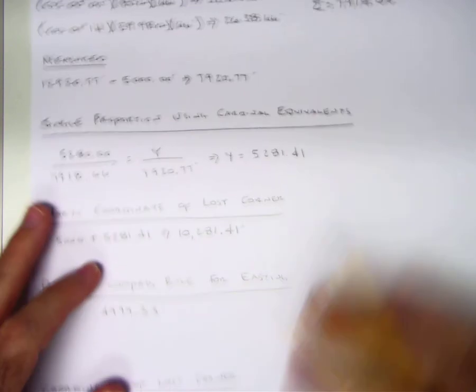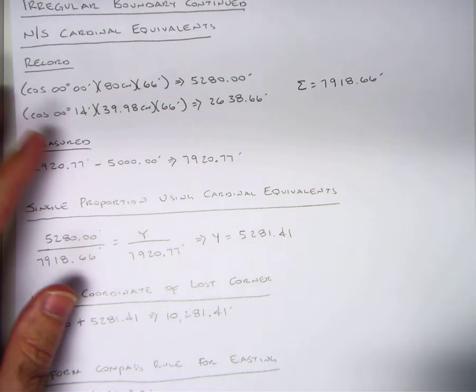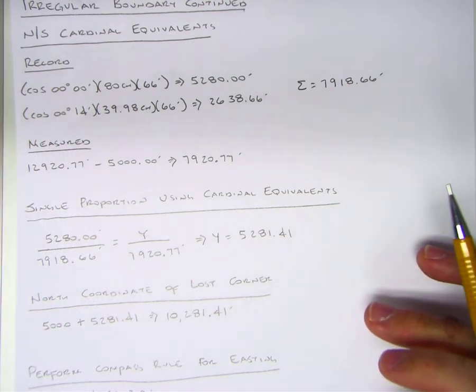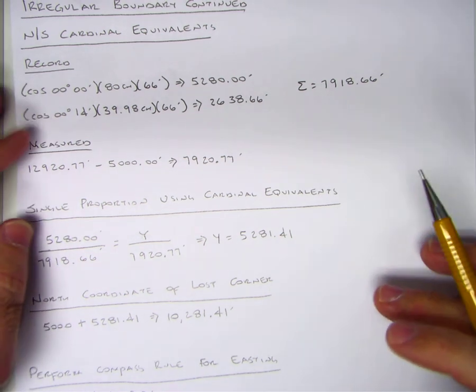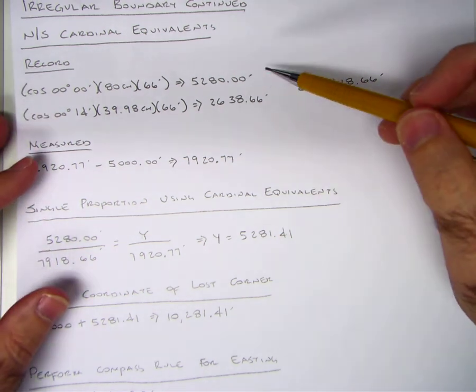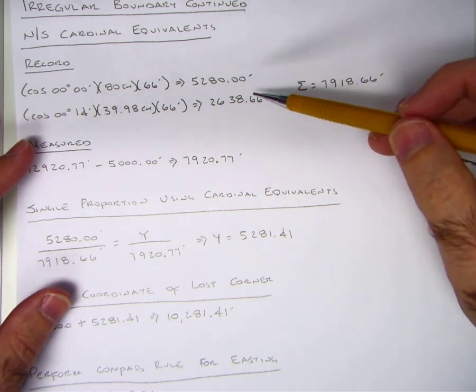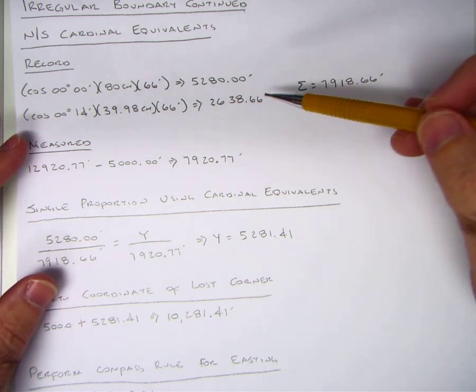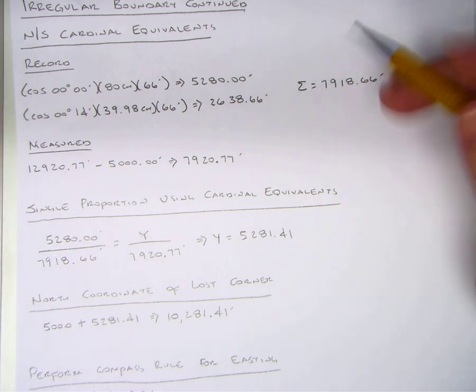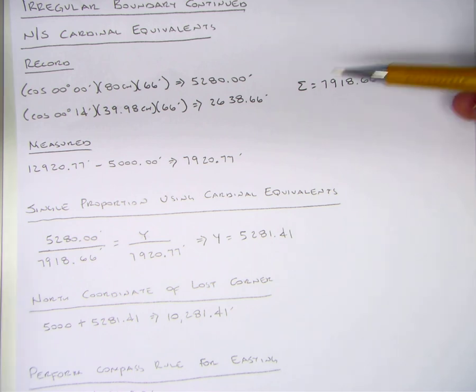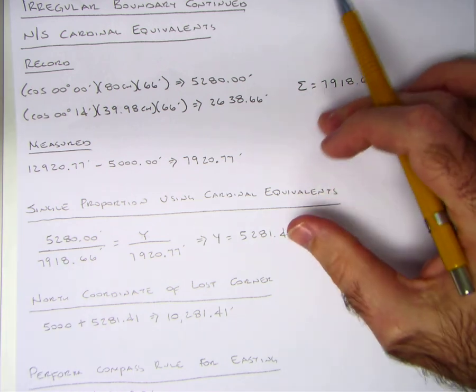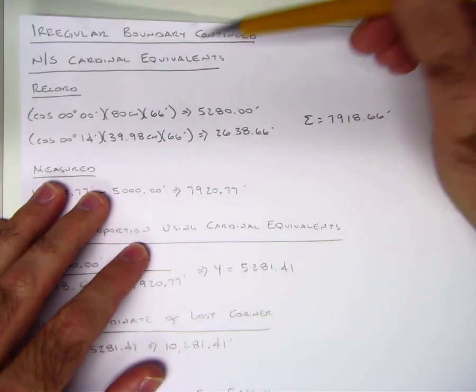In the irregular boundary adjustment, since this line is predominantly north south and very little east west, we do first a single proportion in a north south direction and then the compass rule in an east west direction. If it happened to be a predominantly east west line you would do the single proportion in the east west and the compass rule in the north south.